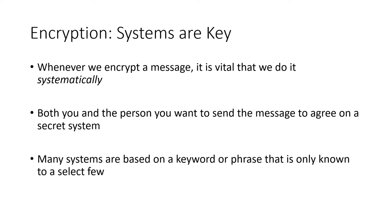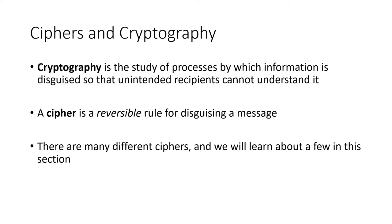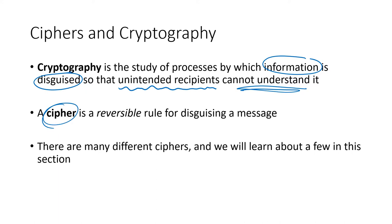A little bit of terminology here. Cryptography is the study of processes by which information is disguised so that unintended recipients cannot understand it. A cipher is a specific rule — and it needs to be a reversible rule — so we can disguise our message, and the intended recipient can un-disguise it. A cipher is the sort of blanket term used for these kinds of rules, and there are many different kinds of ciphers, which we'll learn about in this section.